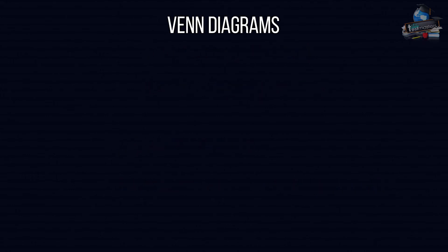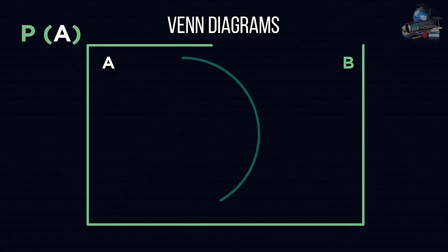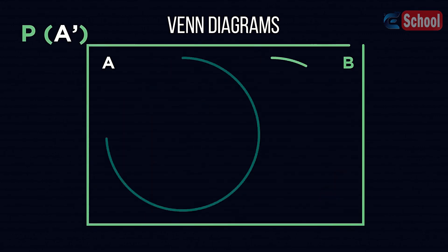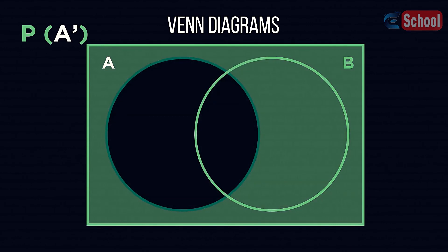Venn diagrams are a useful way of looking at union and intersection, particularly for finding probabilities. If you see P(A), this is asking you for the probability an object is in set A. On a Venn diagram, P(A) would look like this. For not in set A, or P(A'), it would look like this, the inverse.